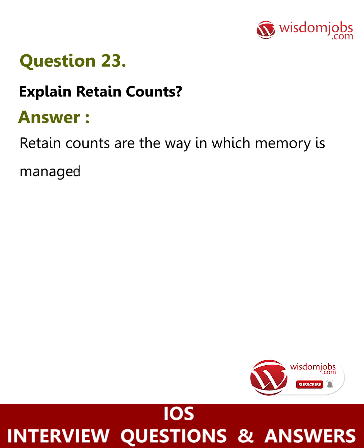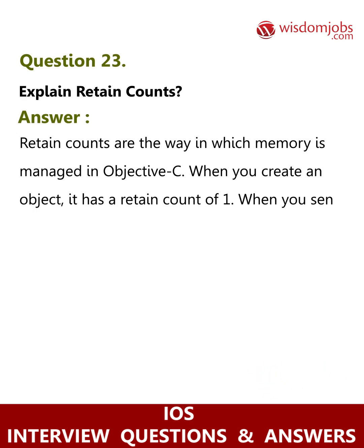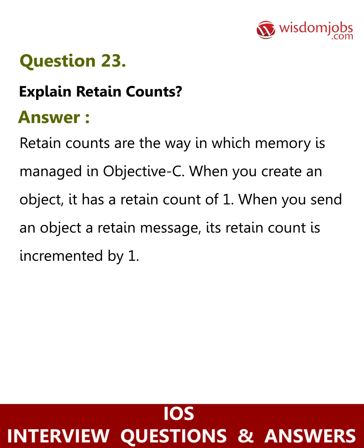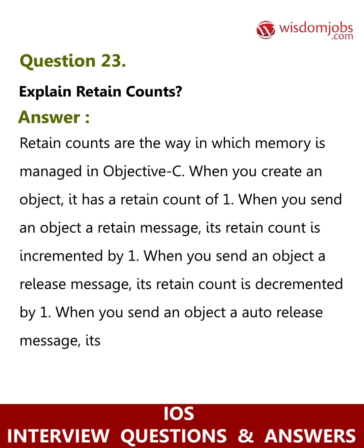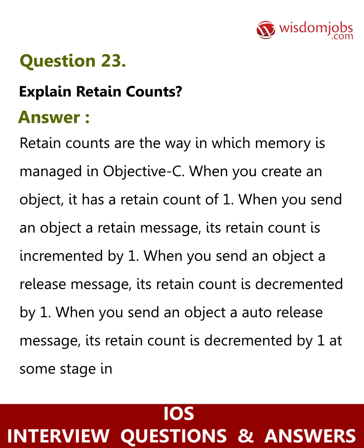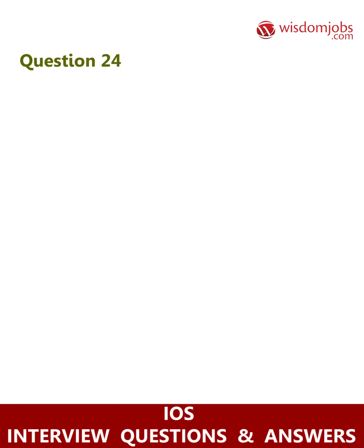Question 23: Explain retain counts. Answer: Retain counts are the way in which memory is managed in Objective-C. When you create an object, it has a retain count of one. When you send an object a retain message, its retain count is incremented by one. When you send a release message, its retain count is decremented by one. When you send an autorelease message, its retain count is decremented by one at some stage in the future. If an object's retain count is reduced to zero, it is deallocated.